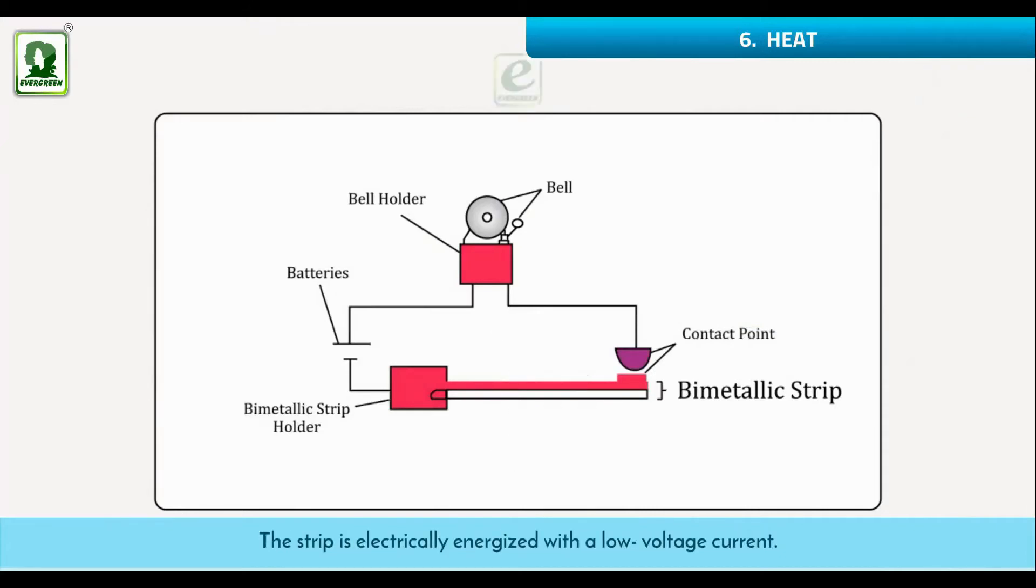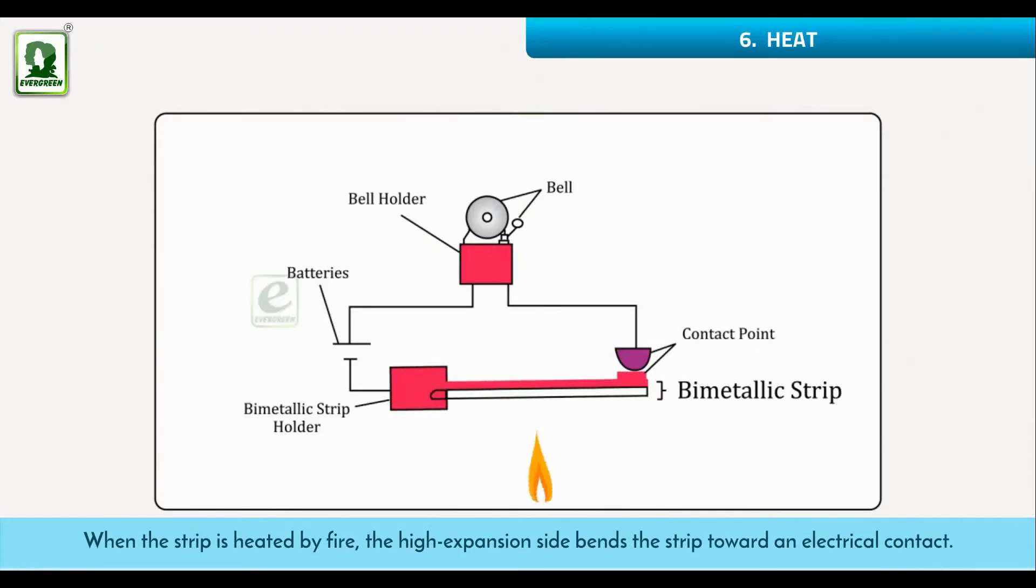The strip is electrically energized with a low voltage current. When the strip is heated by fire, the high expansion side bends the strip toward the electrical contact. When the strip touches that contact, it completes a circuit that triggers the alarm to sound. The width of the gap between the contacts determines the temperature that will set off the alarm.